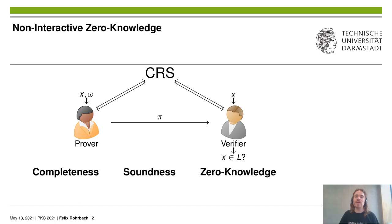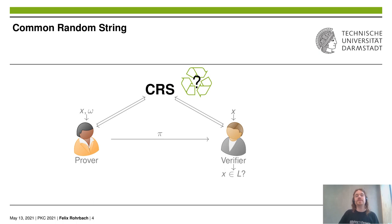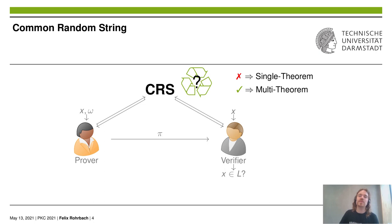If we want to run arguments for all languages in NP, we can only either have unbounded provers or statistical or perfect Zero-Knowledge. In the first case, we speak of non-interactive Zero-Knowledge proofs. In the second case, of non-interactive statistical or perfect Zero-Knowledge arguments. Our focus is on the second one. Many constructions of non-interactive Zero-Knowledge arguments cannot reuse this common random string, or only for a fixed number of arguments — we call these constructions single-theorem. A multi-theorem variant can be used for any polynomial number of arguments.